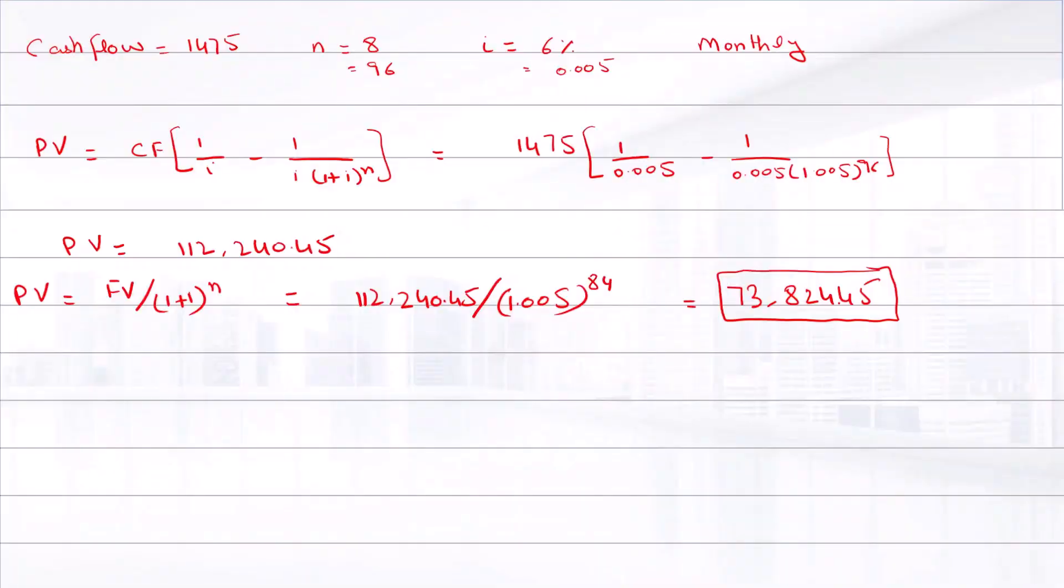Now we find the present value of the annuity for the first 7 years. The cash flow is $1,475, N is 7 years or 84 months, and the interest rate is 0.0075.